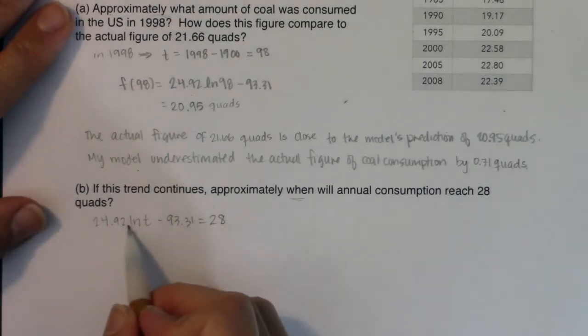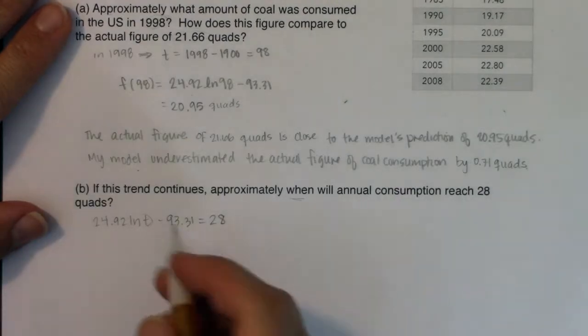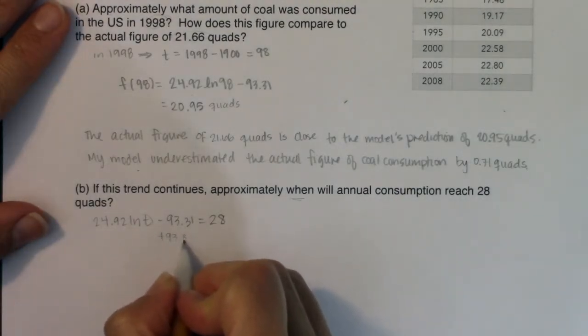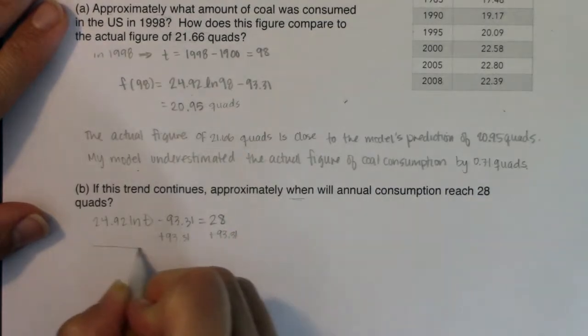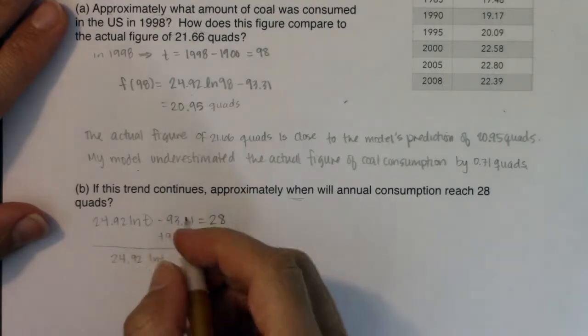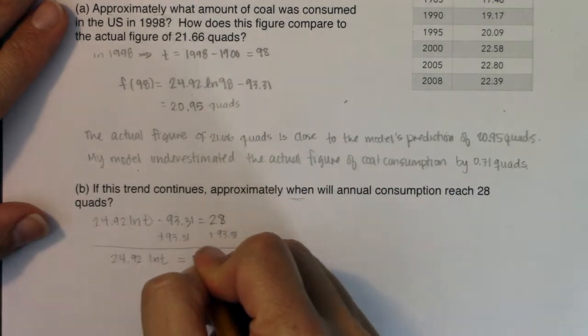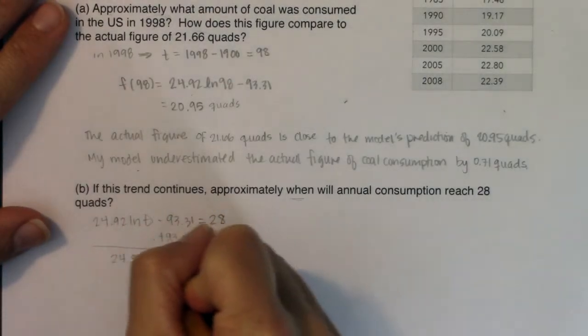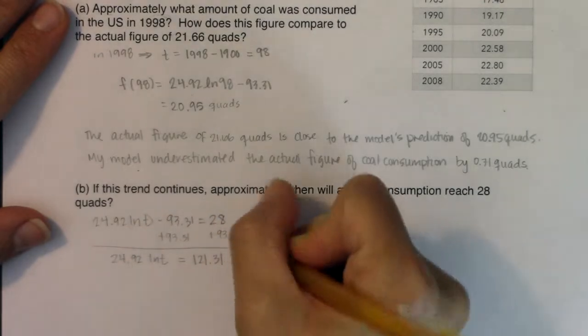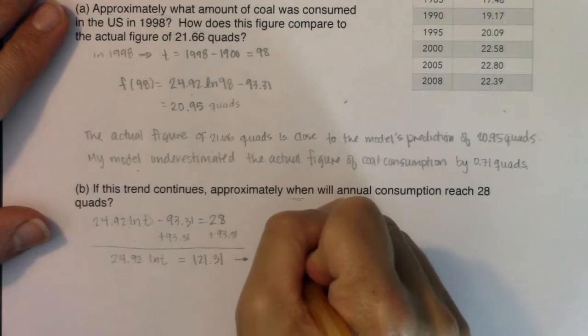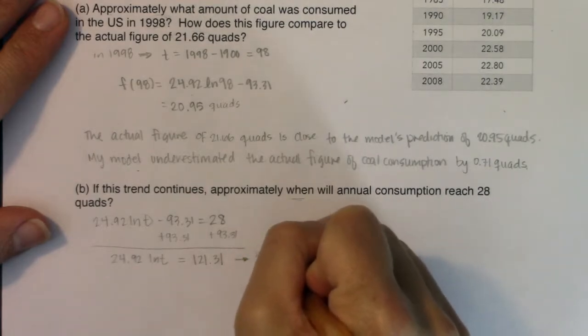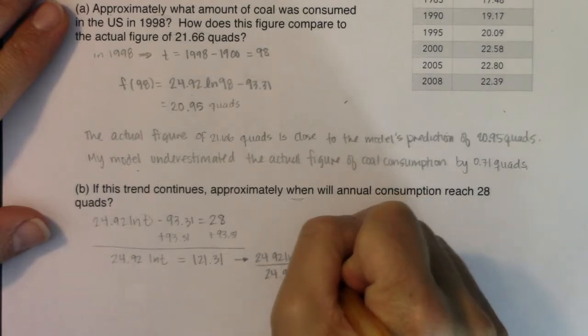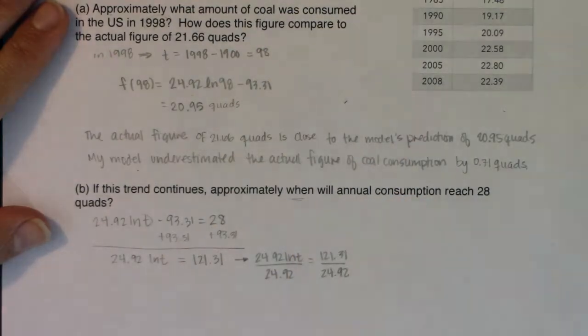Well, if I want to solve for t, I need to isolate that logarithmic term. So let's go ahead and add 93.31 to both sides of this equation. So I'm going to get 24.92 ln(t), that's going to be equal to, let's see, 93 plus 28 is 121.31. Again, I want to isolate that logarithmic term, so I'm going to divide both sides by 24.92.